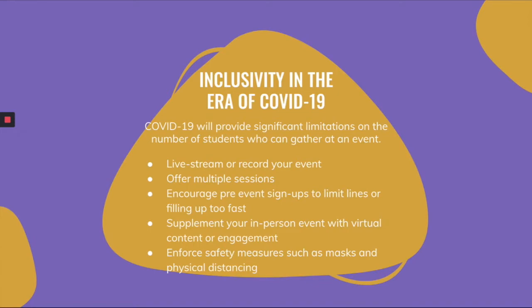Inclusivity in the era of COVID-19 is another thing we need to navigate in fall 2020. There will be limitations on the number of students who can gather at an event. Consider tips such as live streaming or recording your event, offering multiple sessions, and encouraging pre-event signups to limit lines or the event filling up too fast. We think it's a great idea to supplement your in-person event with virtual content so people who aren't comfortable leaving their rooms or who need to stay home due to COVID can still engage online.